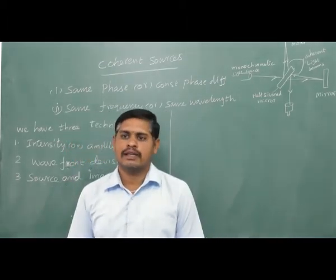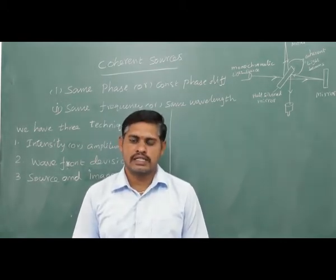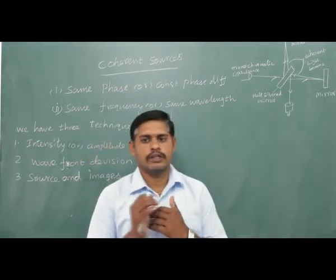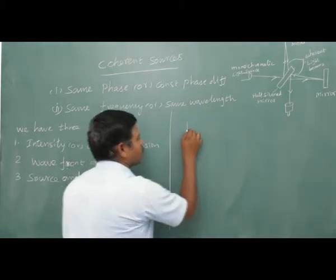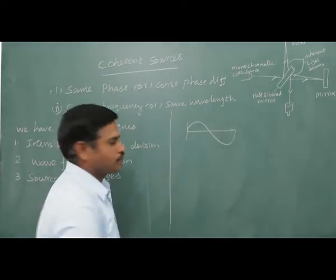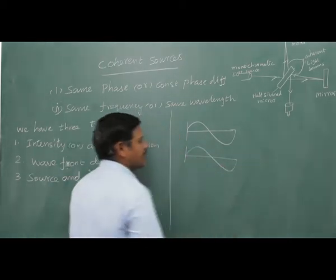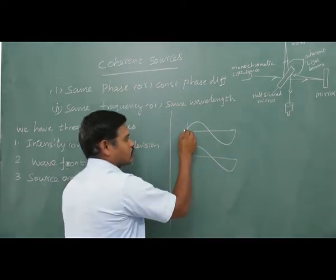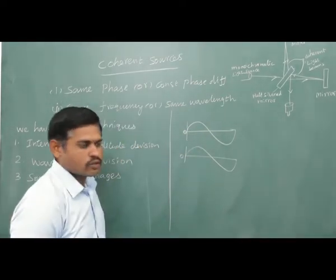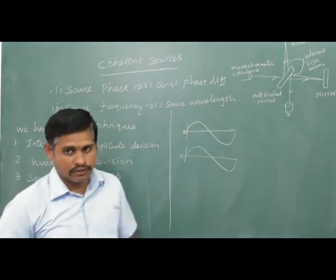Coherent Sources is a property of waves that enables us to obtain a steady interference pattern. For two sources to be coherent, they must be at the same phase. For example, if the first source starts at phase 0 and the second one also starts at 0, that is the same phase — or a constant phase difference.